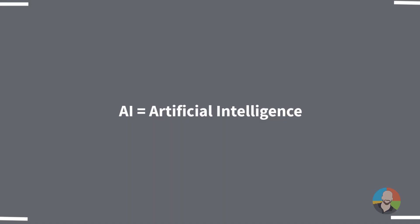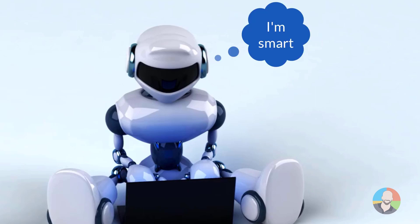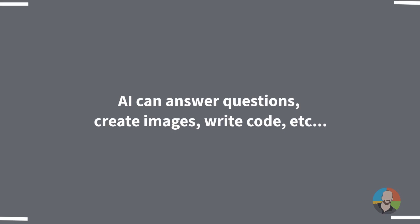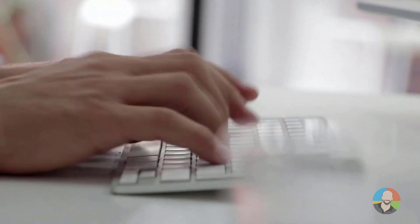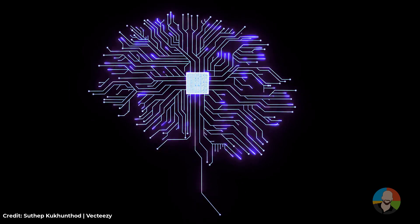AI stands for artificial intelligence, and artificial intelligence uses technology that mimics human intelligence. It's able to provide answers, create images, write documents, create computer code, and a whole bunch of other cool stuff. The key to all this is we use regular everyday language to interact with the AI, and AI is capable of learning from these interactions.